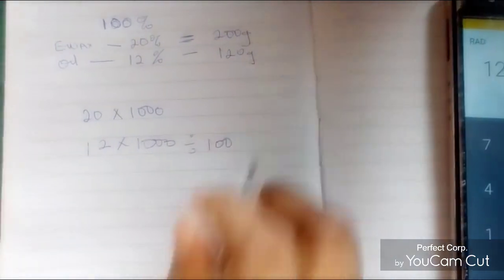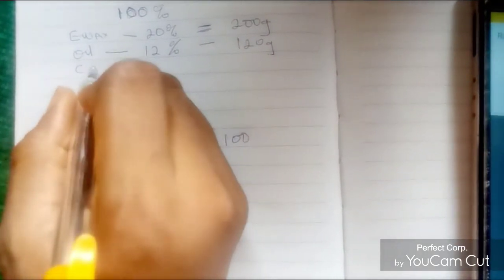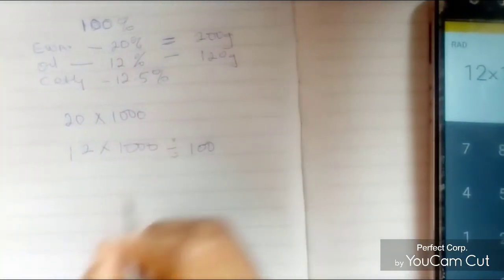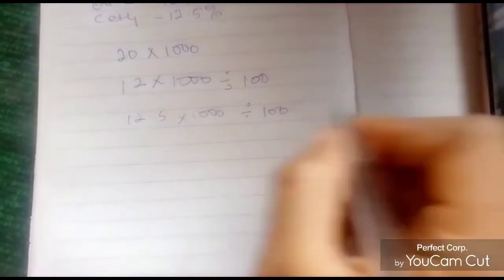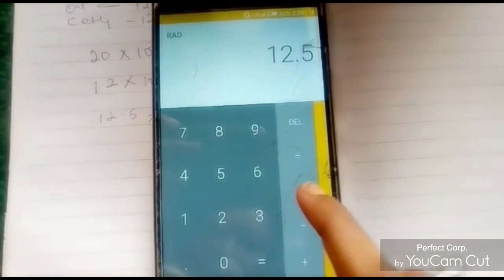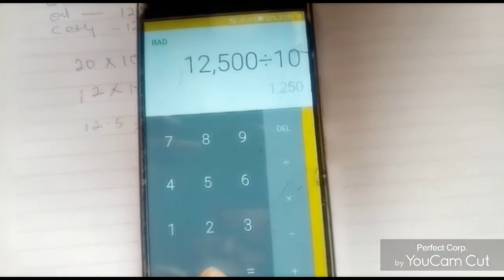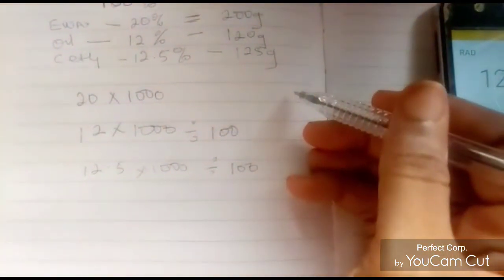12 times 1000 divided by 100. So we have 120 grams. So also in a case where you have, let's say we have a cetyl alcohol at 12.5 percent, it's the same thing. I'm going to do 12.5 times 1000 divided by the total number of percent which is 100. So 12.5 times 1000 divided by 100, which is 125 grams.